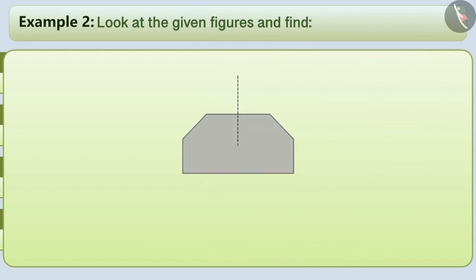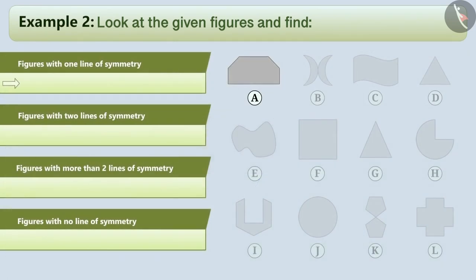If we talk about figure A by folding it vertically, the two halves cover each other completely. It can be seen that this doesn't happen by folding the figure through any other line. Hence, we can say that figure A has just one line of symmetry.